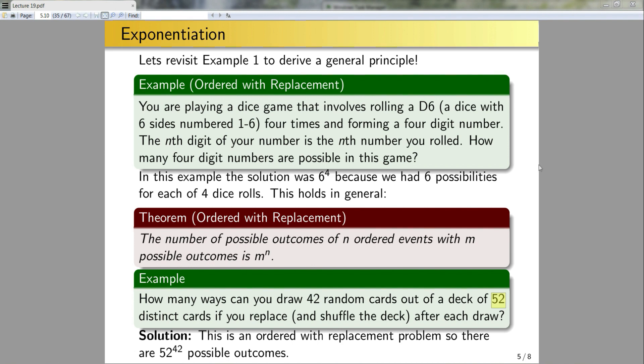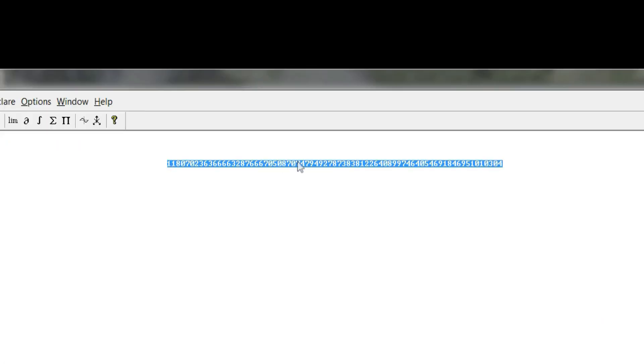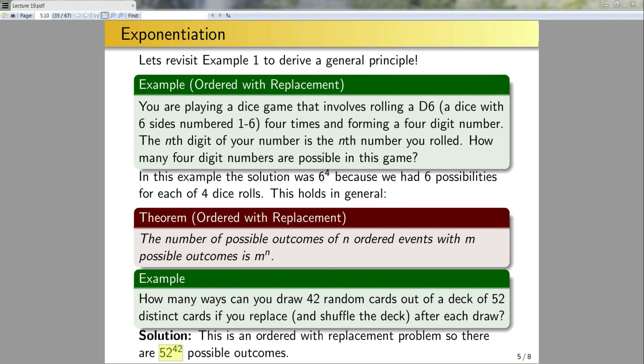Sometimes in your homework, you'll end up with a really big number like this, and the calculators available to you might not be able to compute all of the digits in that number. So it is okay to write big numbers like this in this form rather than writing it out. Whenever I want to compute the total number of outcomes of an ordered with replacement type problem, I use exponentiation similar to how I solved this problem or the previous problem.